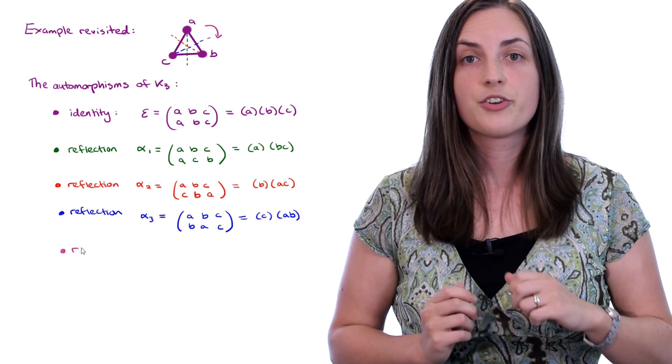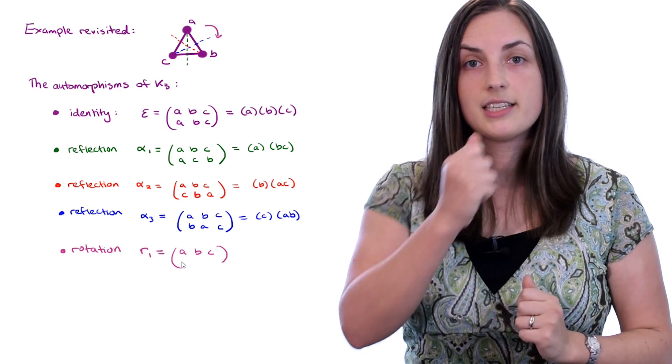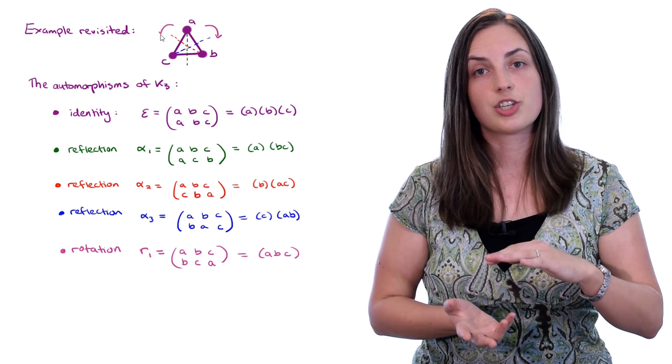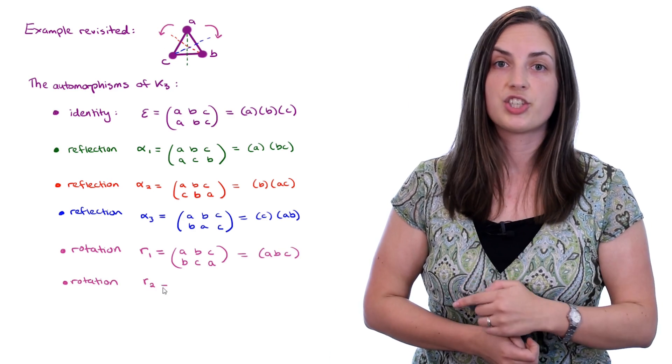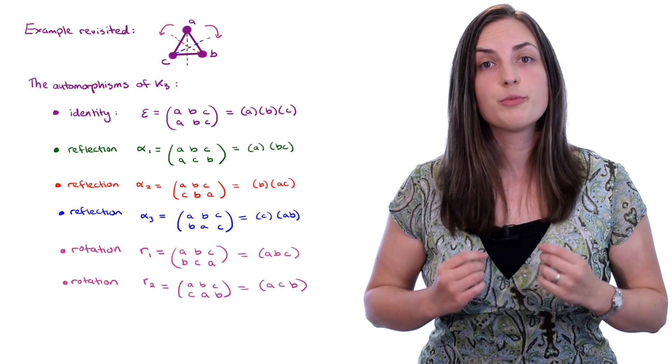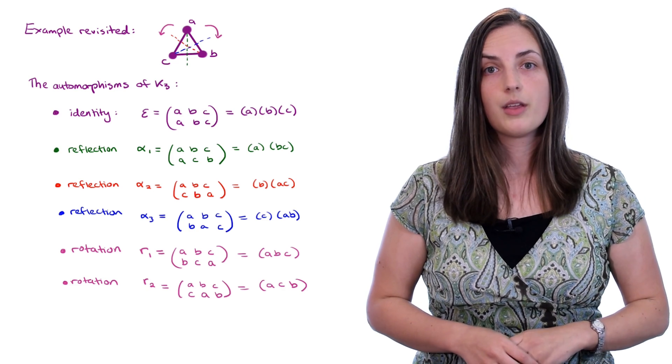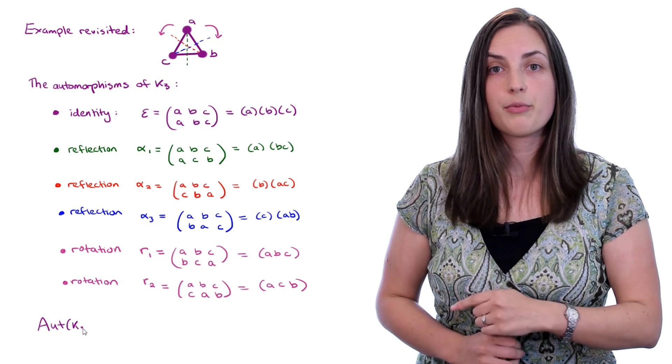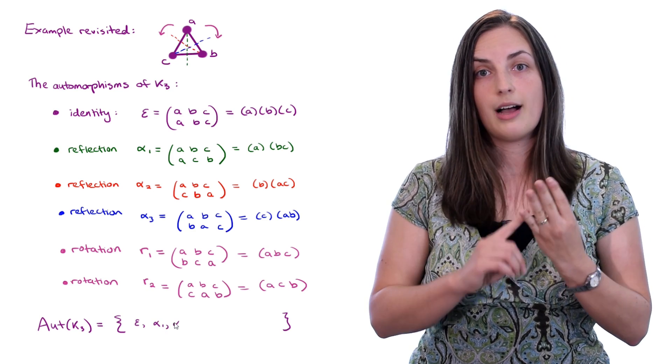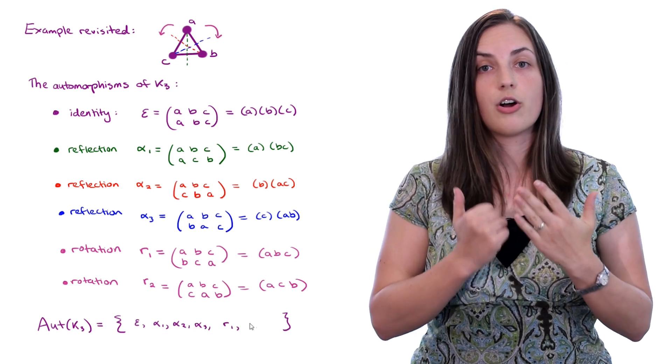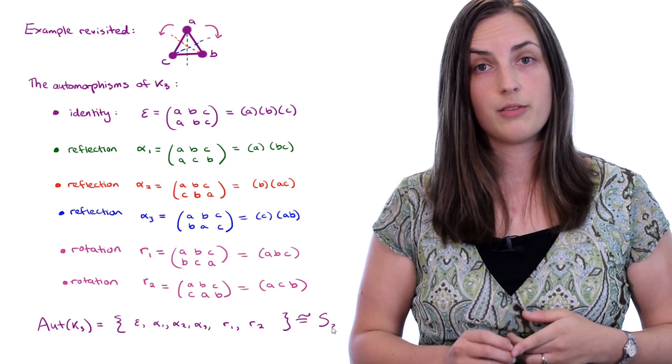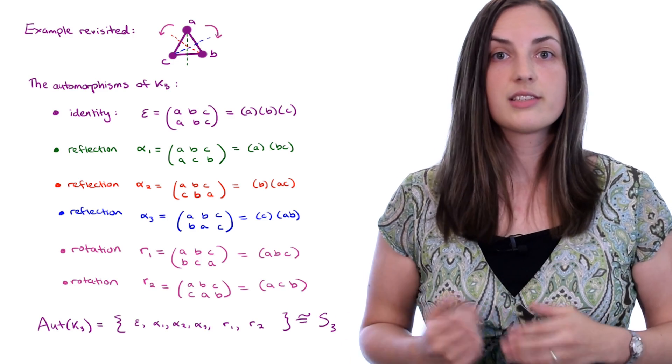Next, the 120 degree clockwise rotation maps A to B, B to C, and C back to A. The rotation in the other direction can also be written down as a permutation, and we'll call that one R2. Okay, so now we've listed down all the symmetries of the graph in terms of the mappings that they are. So that means that the automorphism group of K3 is equal to the identity, and also alpha 1, alpha 2, alpha 3, and R1 and R2. This group is isomorphic to the symmetric group of order 3 factorial, which is 6. There are 6 things in this group.